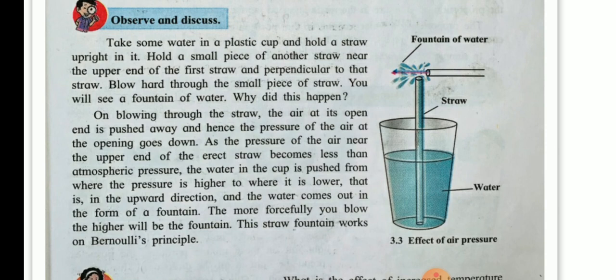As the pressure of the air near the upper end of the erect straw becomes less than the atmospheric pressure, the water in the cup is pushed from where the pressure is higher to where it is lower. That is in the upward direction and the water comes out in the form of a fountain. The more forcefully you blow, the higher will be the fountain. This straw fountain works on Bernoulli's principle.